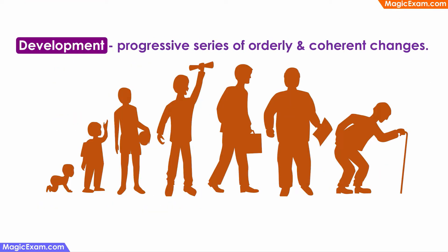The first thing we need to understand is what these principles of development are and where they came from, how they evolved. In the previous video, we studied that development is a progressive series of orderly and coherent changes. That is, there is a specific order followed in any kind of development and the changes that are happening are coherent.